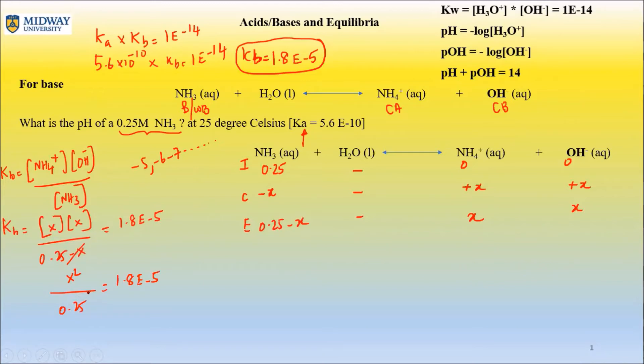So x squared equals 1.8×10^-5 times 0.25. Solve for x. So 1.8×10^-5 times 0.25 and then take the square root. So this right here itself is 4.5×10^-6, and take the square root of that number. So that's 2.21×10^-3.